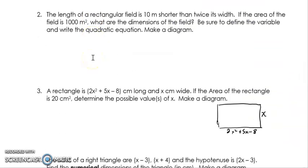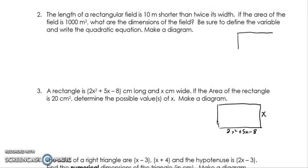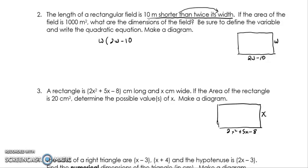Moving on to the next example, again working with length and width for a rectangle. The length of a rectangular field is 10 meters shorter than twice its width. Whatever they're comparing to, that's what we make the variable. So width equals W, and the length is going to be 2W minus 10. If the area of the field is 1,000 square meters, what are the dimensions? Area is base times height, so that's W times 2W minus 10, equals 1,000.